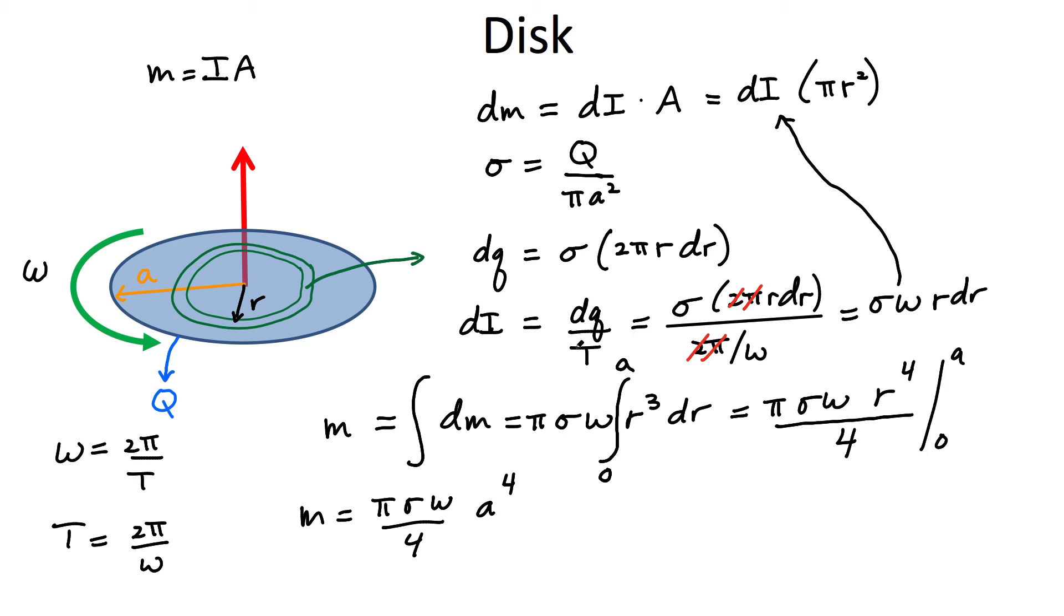Now you can write this in a slightly different way. If I use my charge density, I can write the magnetic moment in terms of the total charge. So let's go ahead and do that. So I leave this the way it is. My charge density here was Q divided by pi a squared. And I'm still left with all of those other terms, a to the four. So the last thing you can do here is just simplify this expression. I can cancel two of those. And I'm left with two at the top. So the final expression you get is one fourth, the total charge of the disk, the radius squared, and omega.